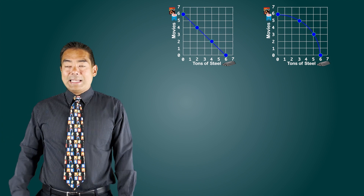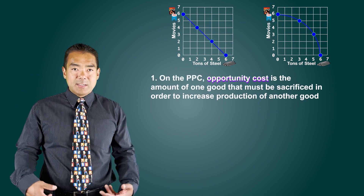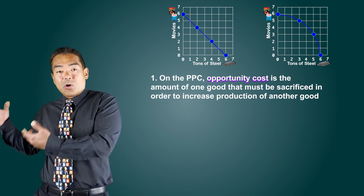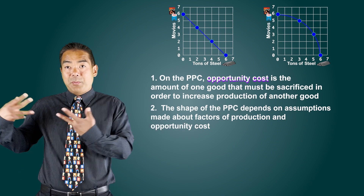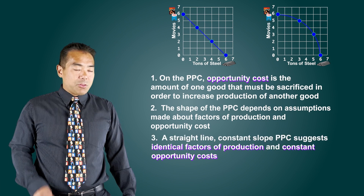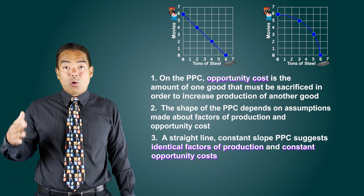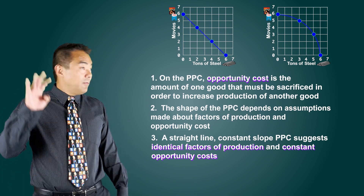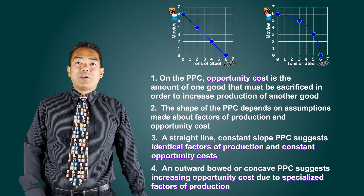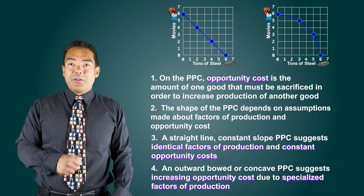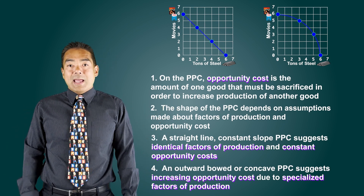So the most important idea from today is the concept of opportunity cost as it relates to the production possibilities curve. One: opportunity cost looks at how much of a good you have to give up to gain one more unit of another good. Two: the shape of the PPC depends on assumptions about factors of production and opportunity cost. Three: a straight line PPC suggests identical factors of production and constant opportunity cost. Four: an outward bowed or concave PPC suggests increasing opportunity cost, which arises when factors of production are not identical and some are better suited to producing one good than the other.